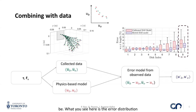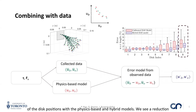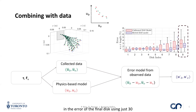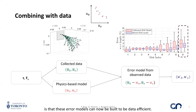The error distribution in the disk positions with the physics-based and hybrid models is shown here. We see a reduction in the error of the final disk using just 30 observations for training. Another advantage of having just six parameters is that these error models can now be built to be data efficient.